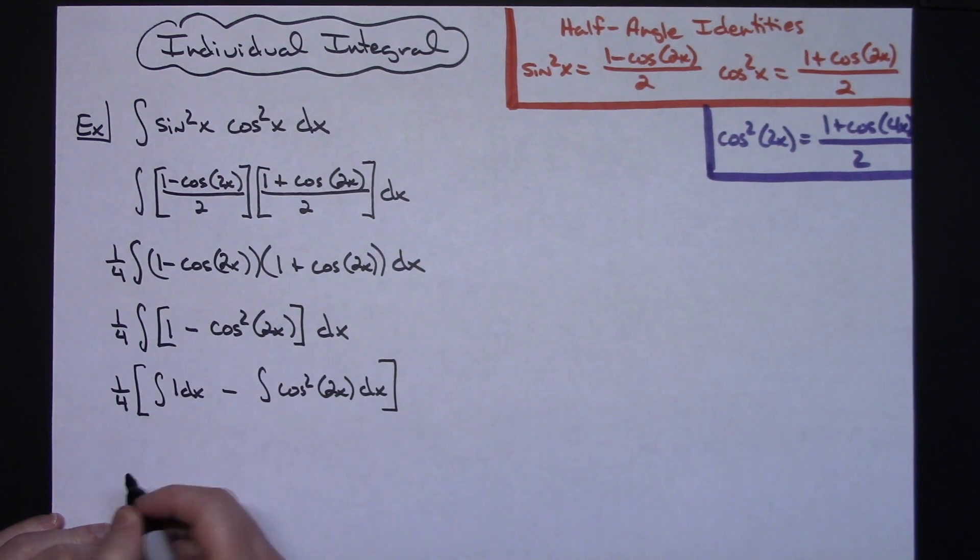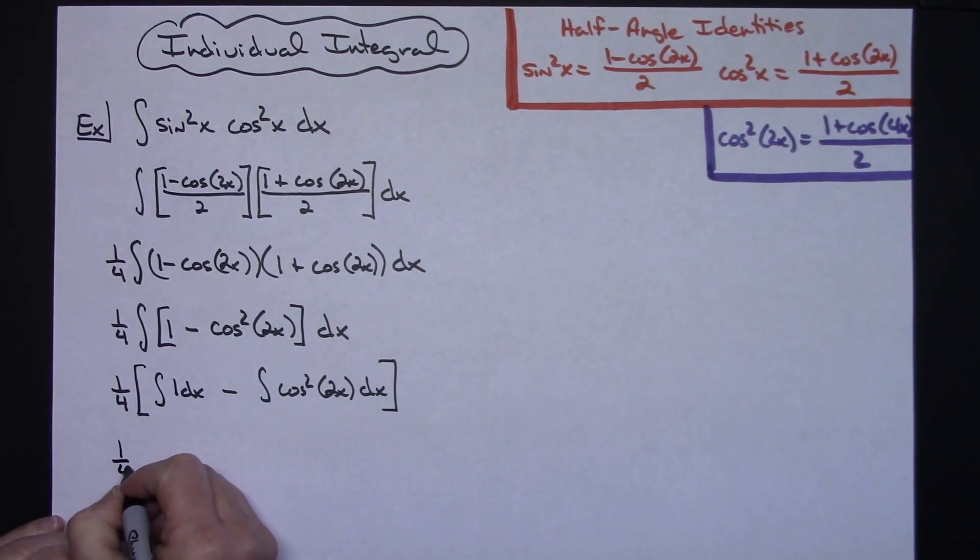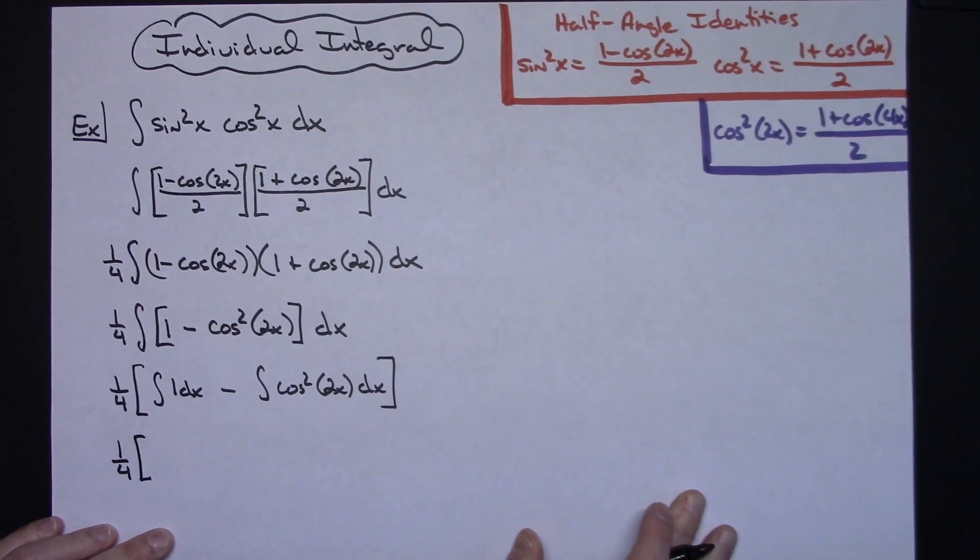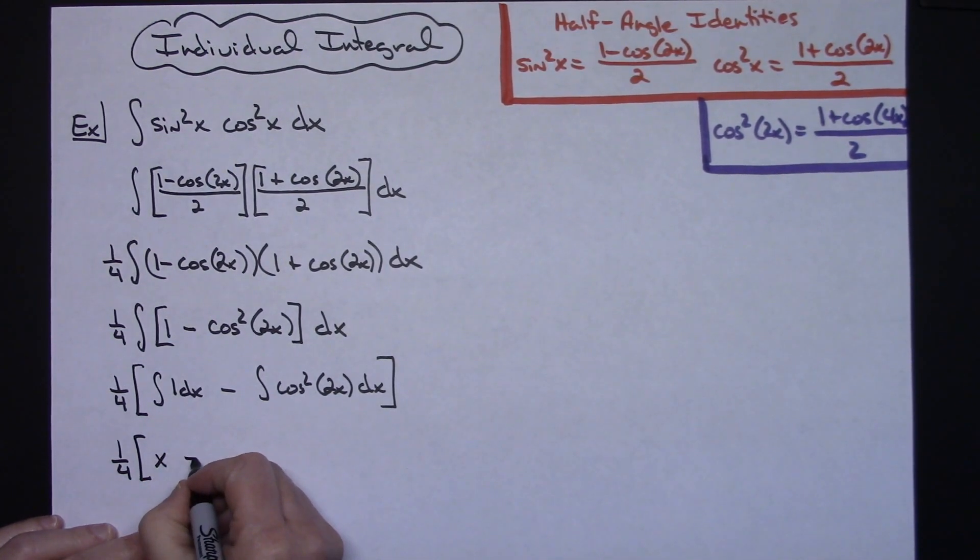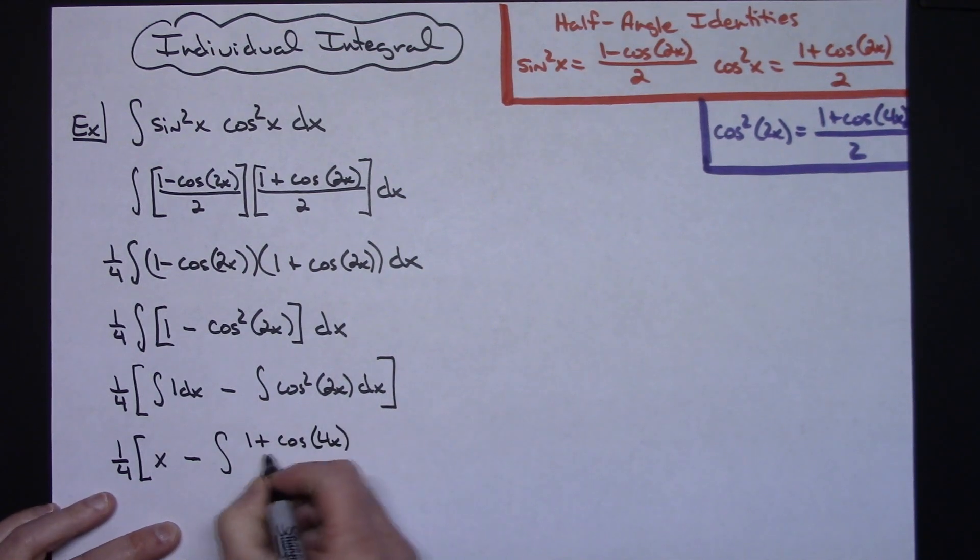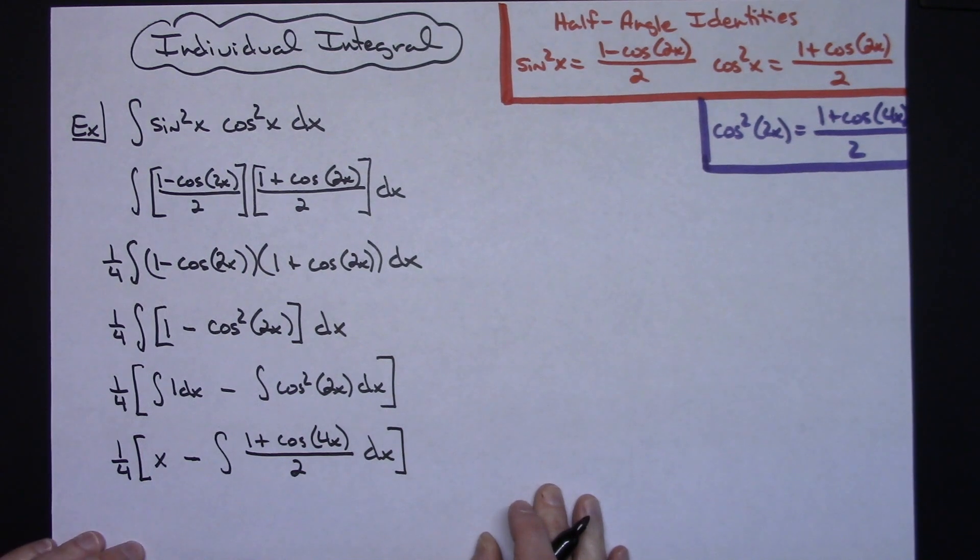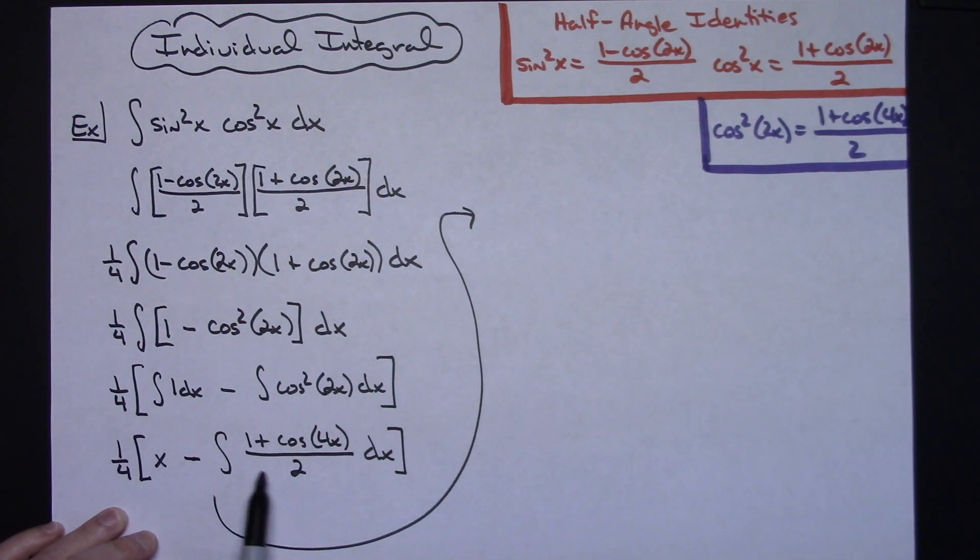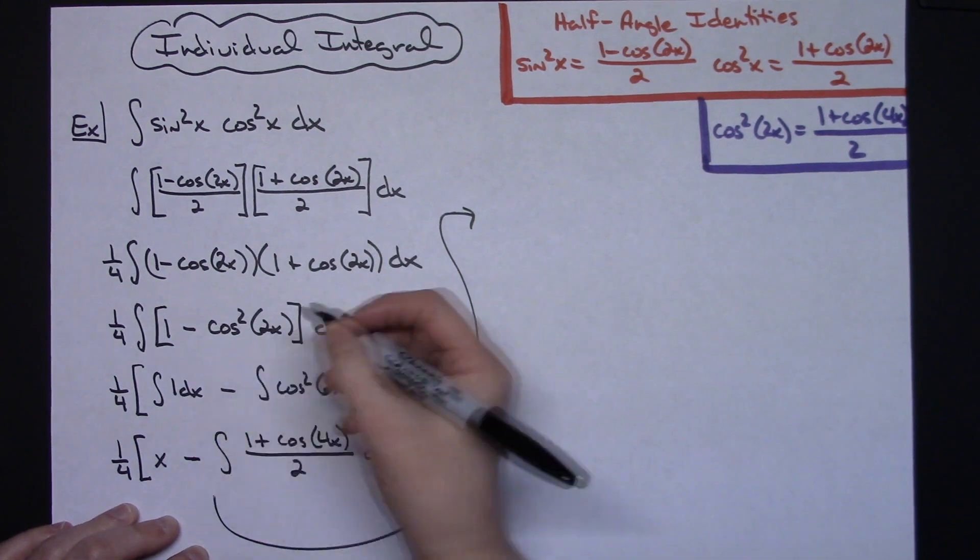I'm going to go ahead and integrate this because that's so simple. So we'll do a 1 fourth times the quantity of integrating that 1 dx. I'll have an x and then minus the integral. Making that substitution, we'll have 1 plus cosine of 4x all over 2 dx. And then let's bring it up here so we've got more room to write. I'm going to take this 1 half and pull it out in front, and at the same time I'm going to take the numerator there and break it up into two individual integrals like I did earlier.